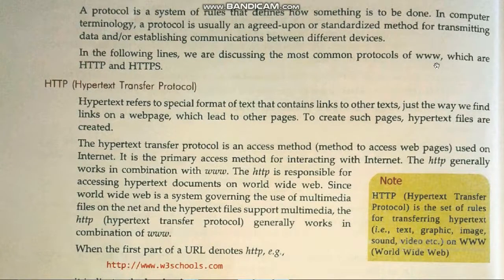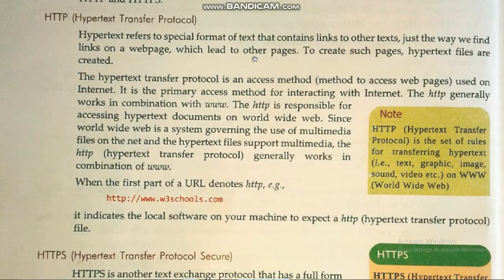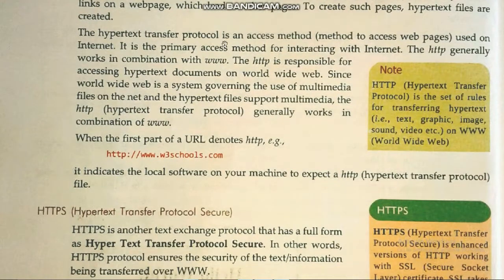The most common protocols worldwide are Hypertext Transfer Protocol (HTTP) and Hypertext Transfer Protocol Secure (HTTPS). Hypertext refers to a special format of text that contains links to other texts, just the way we find links on a web page. HTTP is the access method used on the internet — it is the primary access method for interacting with the internet.